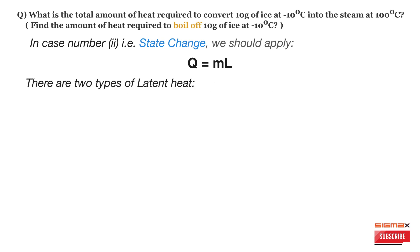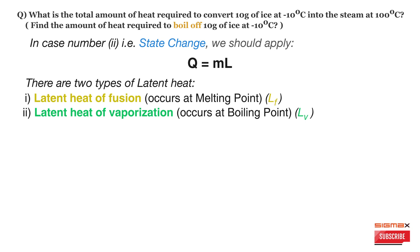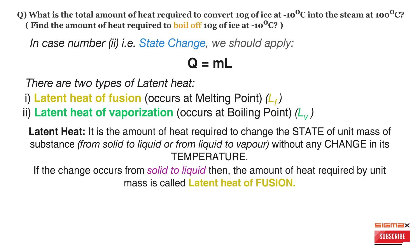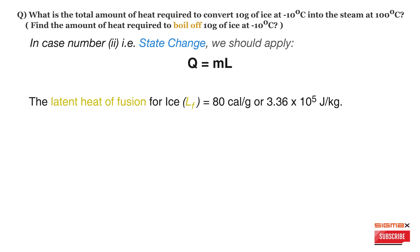There are two types of latent heat: latent heat of fusion, which occurs at the melting point and is denoted by L_F, and latent heat of vaporization, which occurs at the boiling point and is denoted by L_V. Latent heat is the amount of heat required to change the state of a unit mass of substance from solid to liquid, or from liquid to vapor, without any change in temperature. For this problem, the latent heat of fusion for ice, L_F, is 80 calories per gram in CGS units, or 3.36 × 10⁵ joule per kg in SI units.